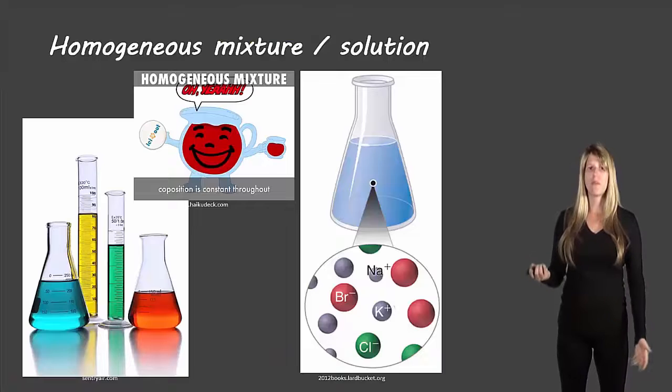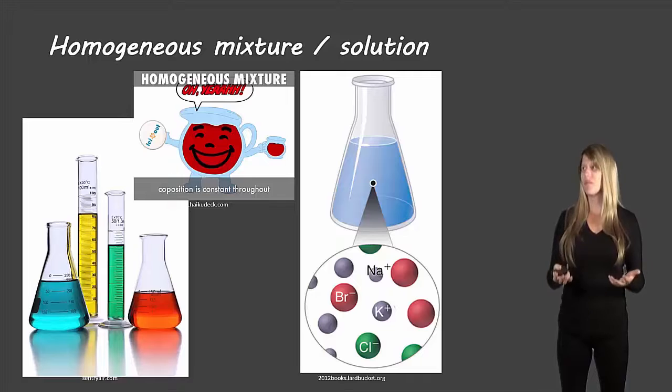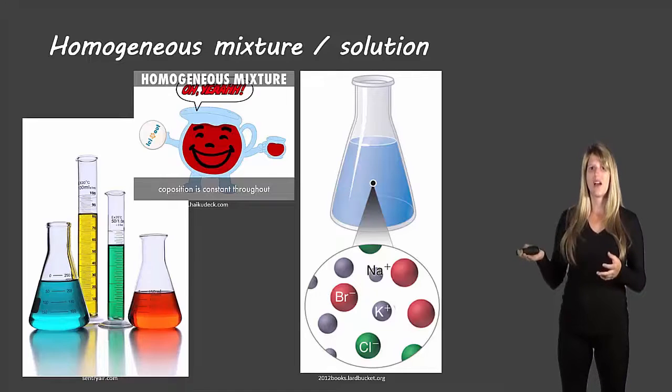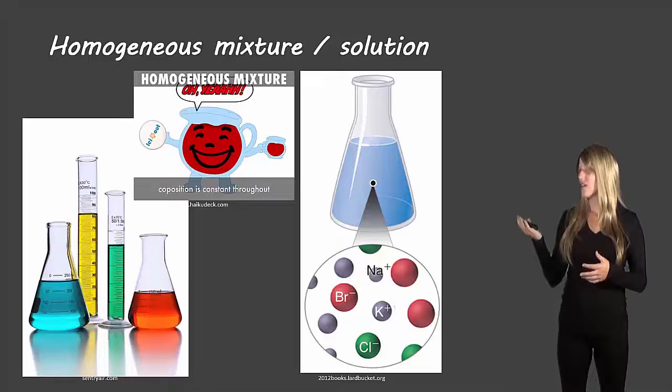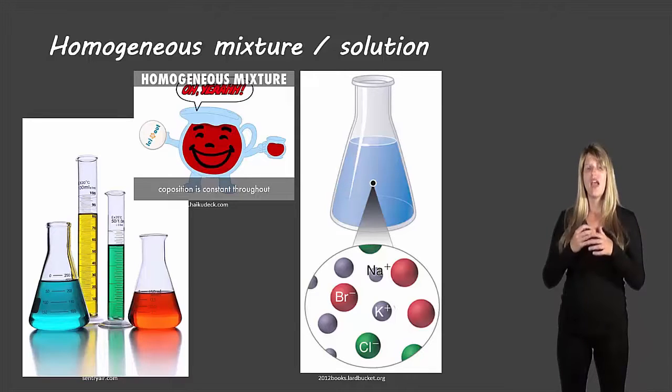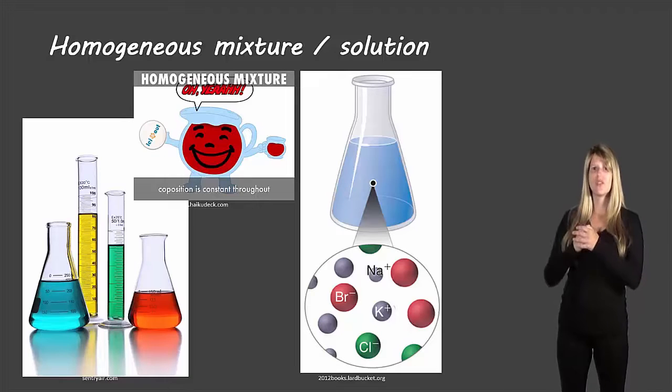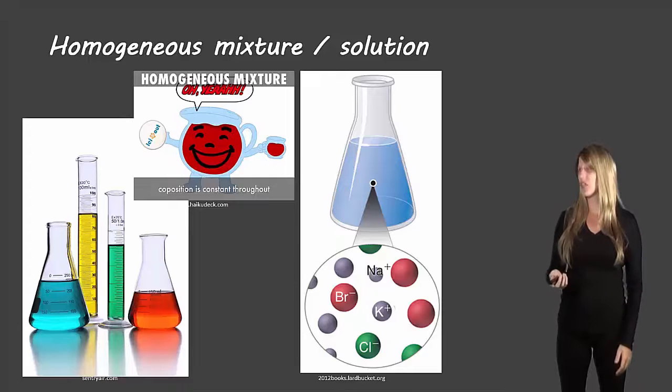So here are some examples of homogeneous mixtures. Something like Kool-Aid or any of those sorts of drink mixes. There's some different glassware that have different color, looks like food coloring and water mixed in there. Or if we have a beaker what looks like it's got several different types of ions but they're all mixed together in there and you can't see them from the zoomed out version. You can't see them. Only when you zoom in can you see the individual parts which means it's a homogeneous mixture.